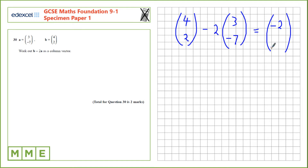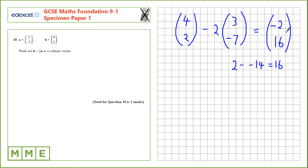On the Y side, we have 2 take away 2 times minus 7. So, 2 lots of negative 7 is negative 14. And 2 subtract negative 14 — so 2 minus minus 14 — is the same as adding, that's 16. The column vector answer is minus 2, 16.